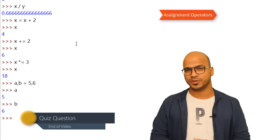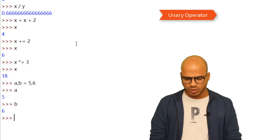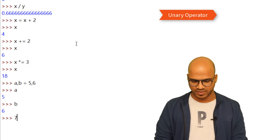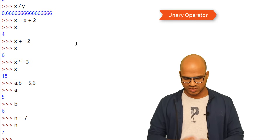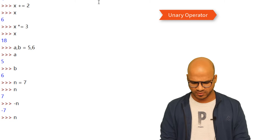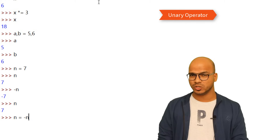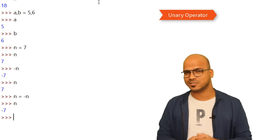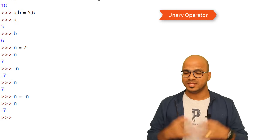Next is the unary operator — 'unary' means one operand. An example is negation: if n is equal to 7 and you want to negate it, you can say n equal to minus n. After that, printing n gives minus 7. So you can flip a value negative using the unary minus operator.